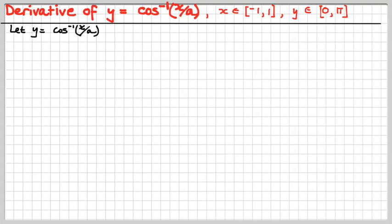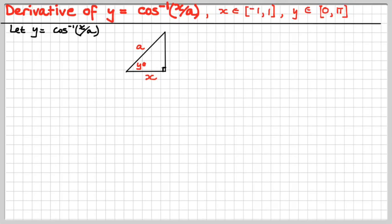Now we're going to do inverse cos and then inverse tan. We know that y is the angle whose cos is x over a, where x goes from minus 1 to 1 inclusive, but the y for inverse cos goes from 0 to pi inclusive. We need a magic triangle. Y is the angle whose cos is x over a. We need the third side — thank you, Mr. Pythagoras.